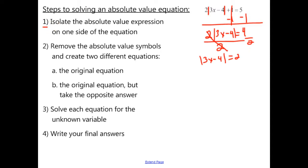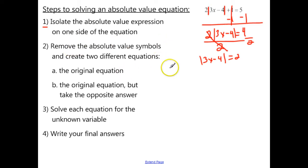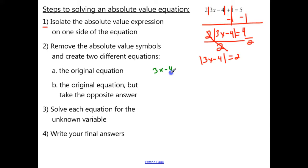Step number 2: remove the absolute value symbols and create two different equations. The first equation is going to be the original — all I'm going to do is rewrite this without the absolute value symbols: 3x minus 4 equals 2.